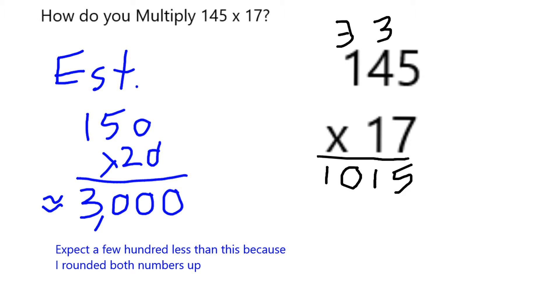Now I'm going to bring down a 0 for my next row. 1 times 145 is just 145.